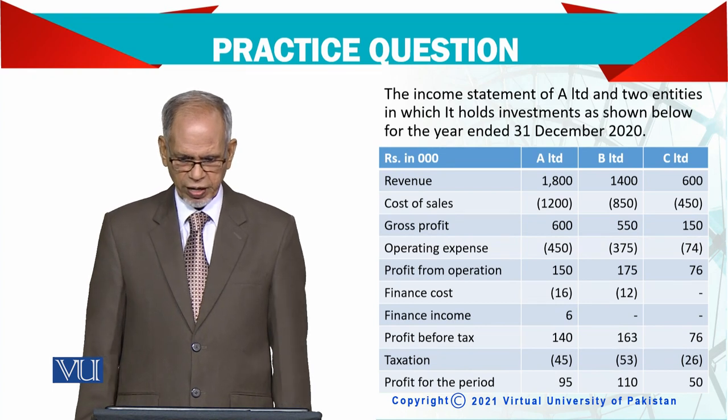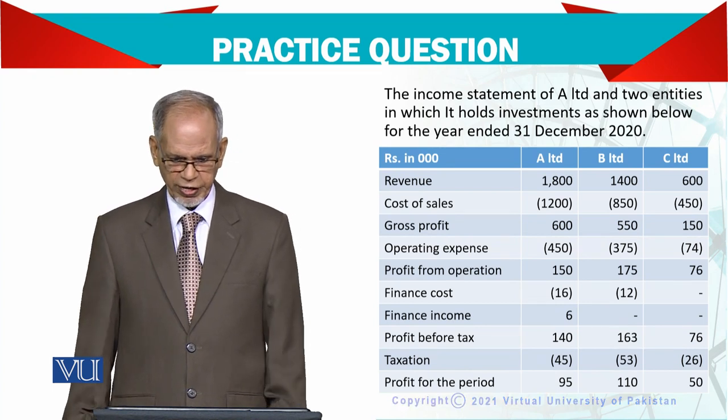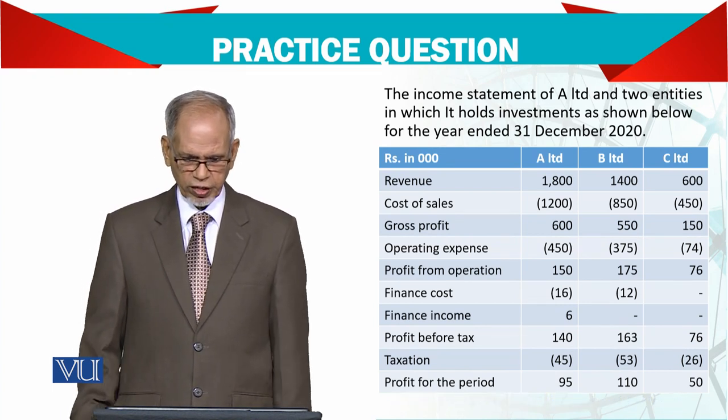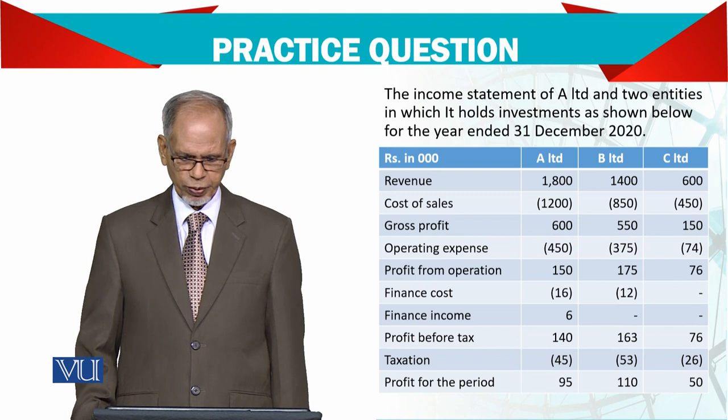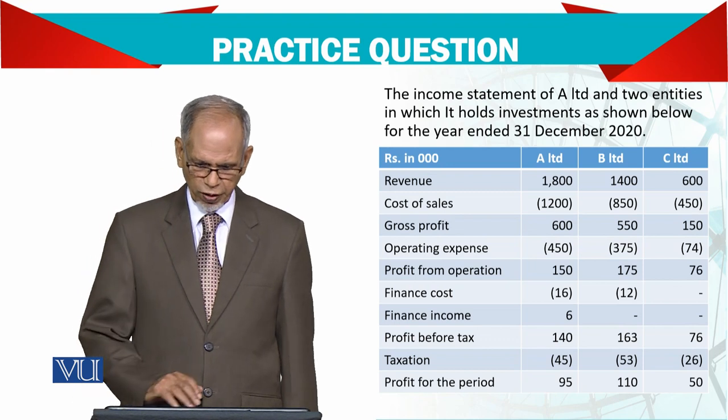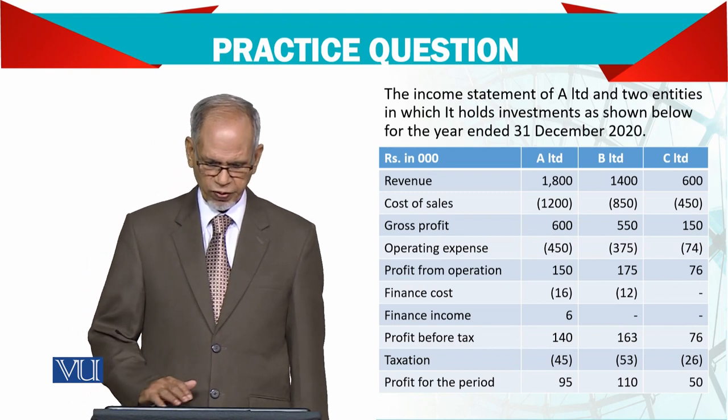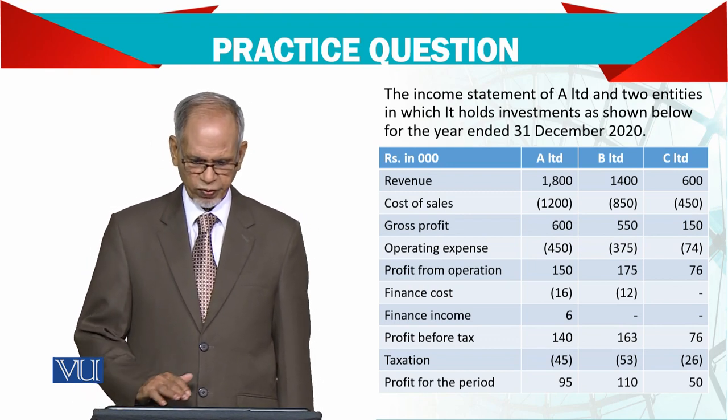Revenue A, B, C — Cost, Gross Profit, Operating Expense, Profit from Operations, Finance Cost.